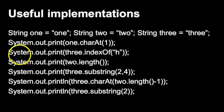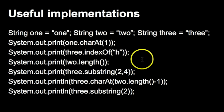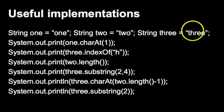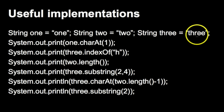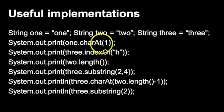In the next print statement, it says System.out.print three.indexOf('h'). This method looks for the index of a specific character. Looking at the string 'three', 't' is at index 0, 'h' is at index 1, and 'r' is at index 2. So indexOf('h') will print out 1. So charAt(1) returns a char 'n', and indexOf('h') returns the int 1.